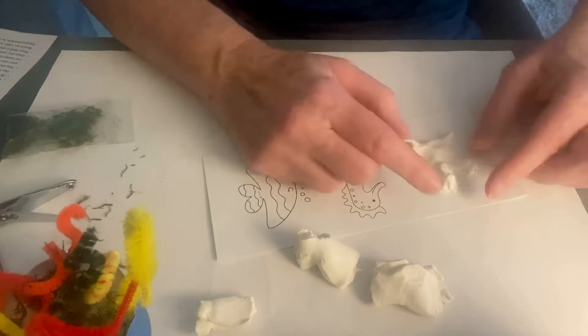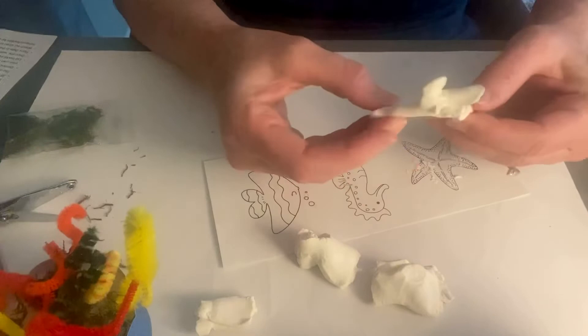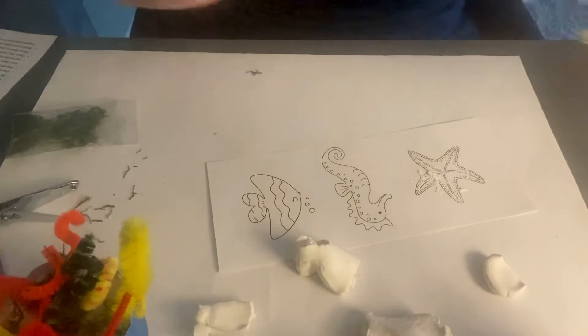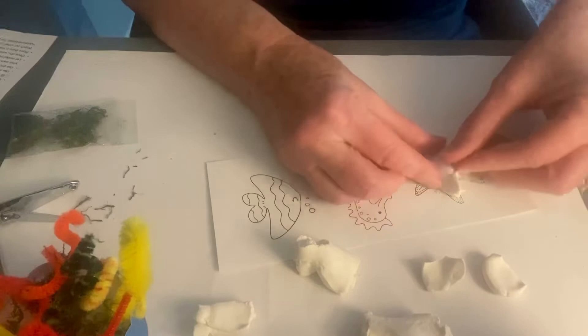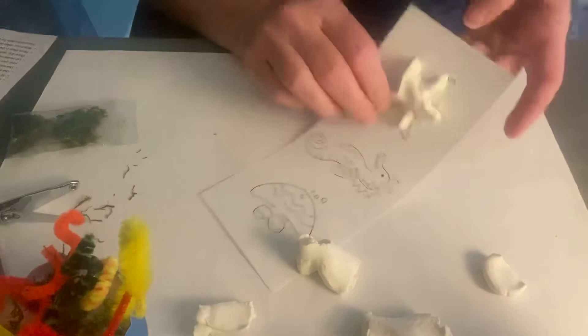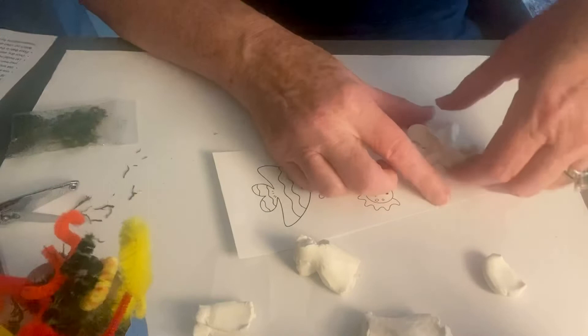And then peel it off. That one's kind of a mess so I'm going to redo that one. I think I have too much clay in my hands. So you don't need much to make the little sea star. So let's try that one again. And then we'll add the little arms on the side. So you're just using it kind of just to give you an idea of what the shape is.